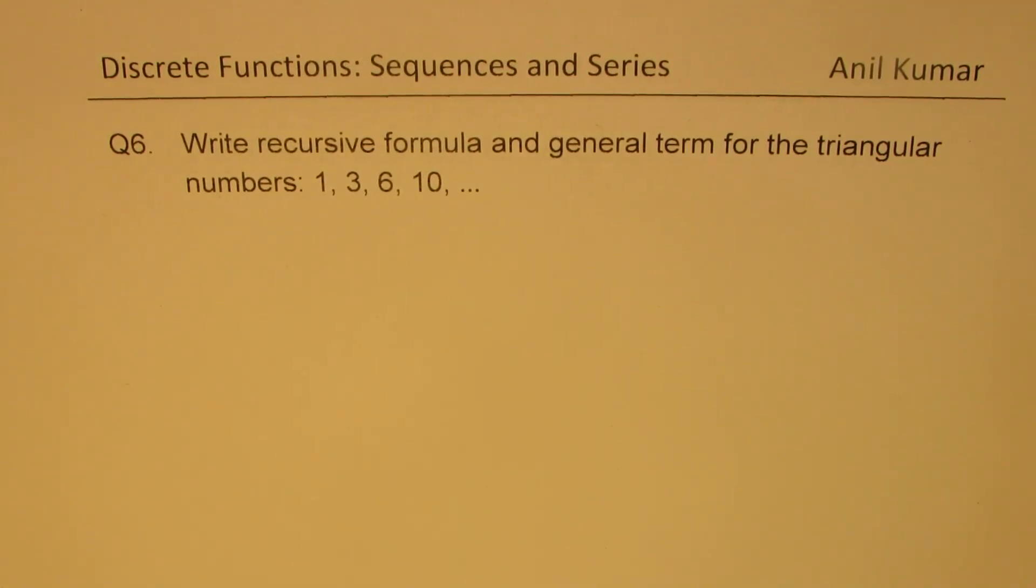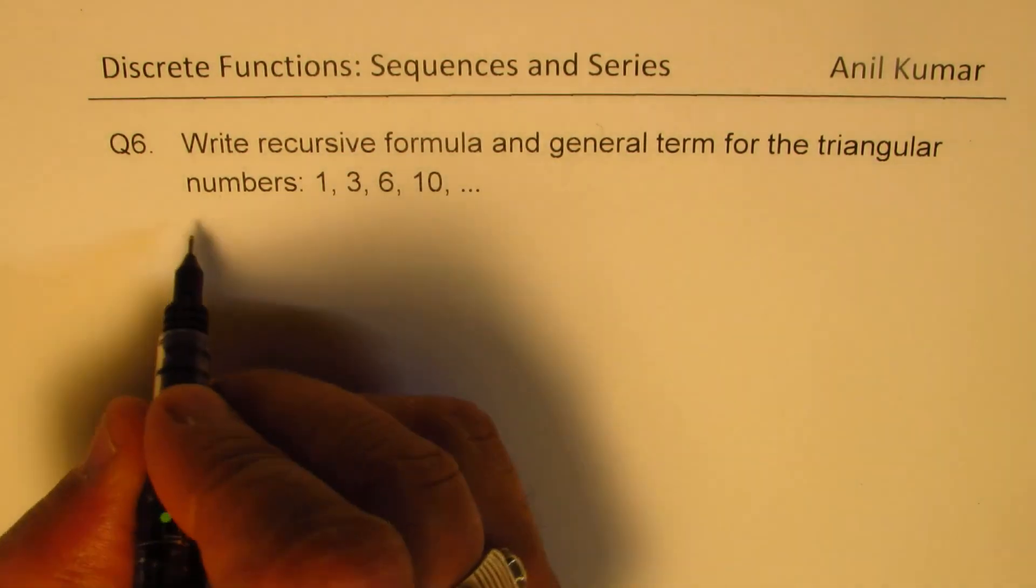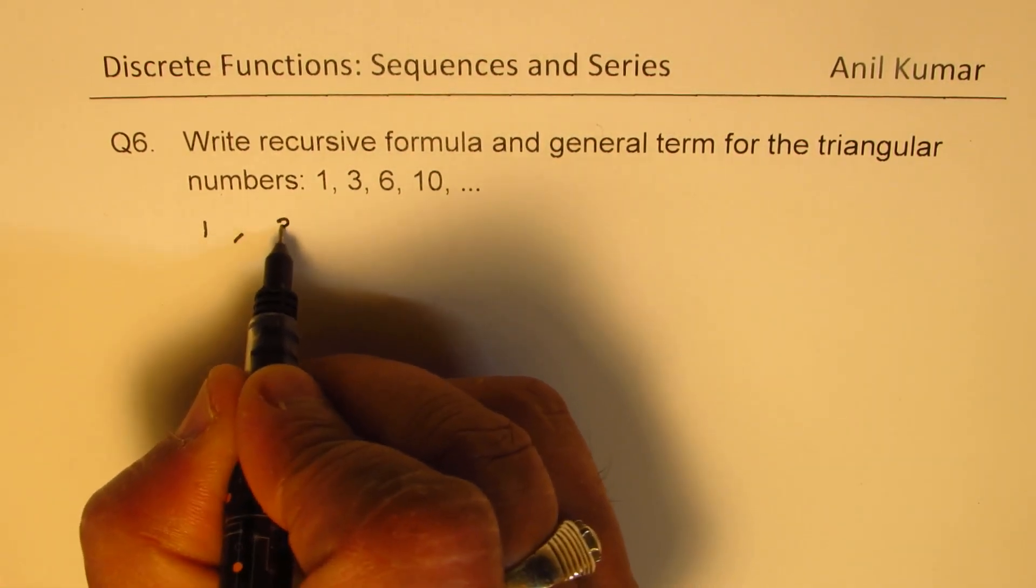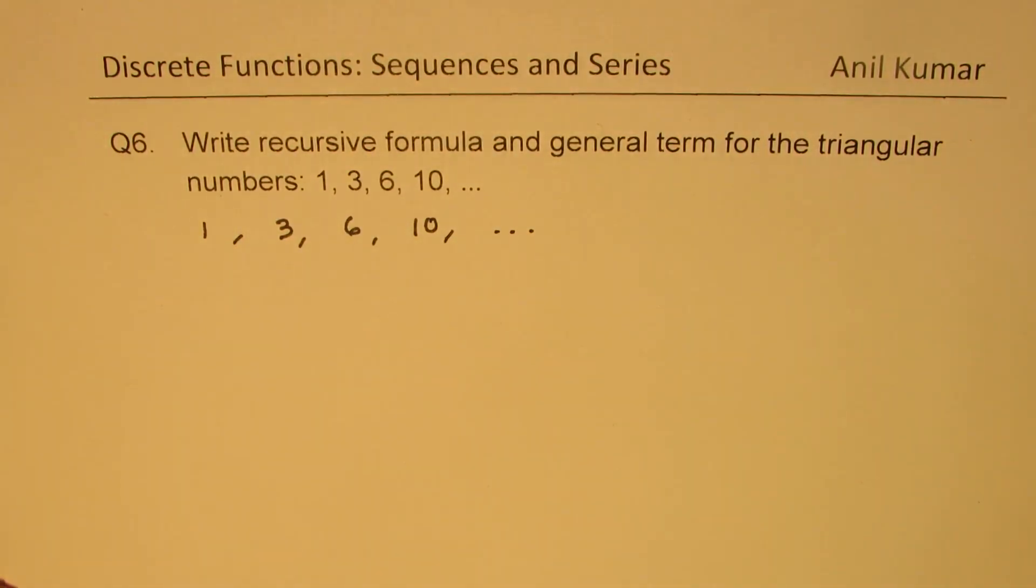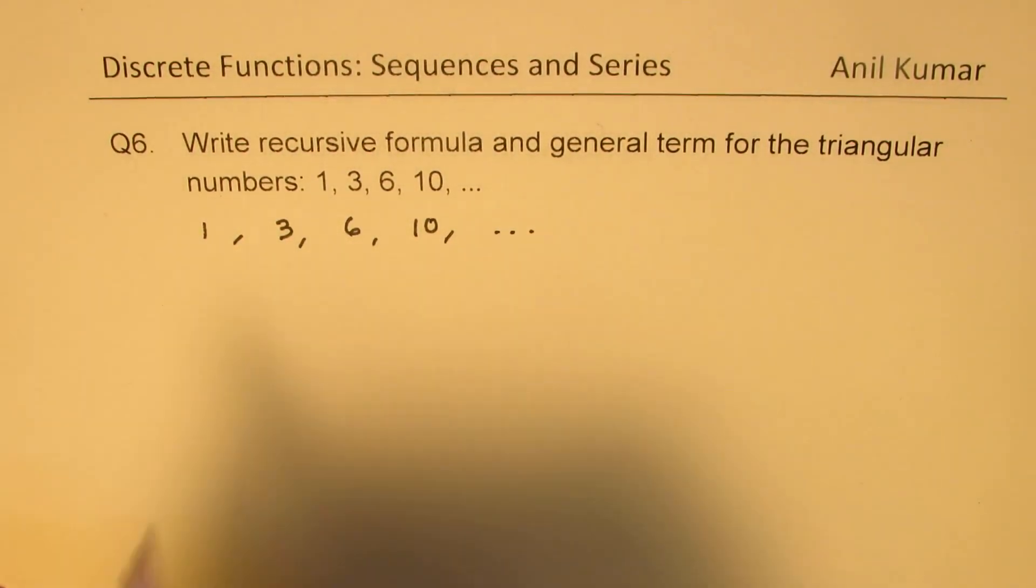Question number six: write recursive formula and general formula for the triangular numbers 1, 3, 6, 10. Now it is interesting to note that these numbers 1, 3, 6, 10 and so on are actually called triangular numbers mainly because...